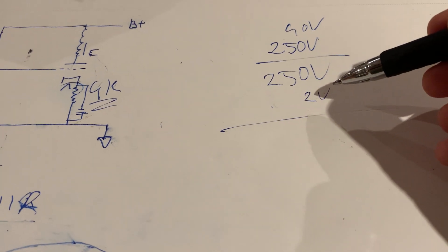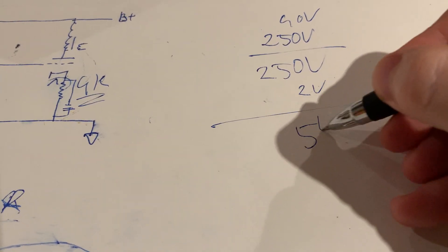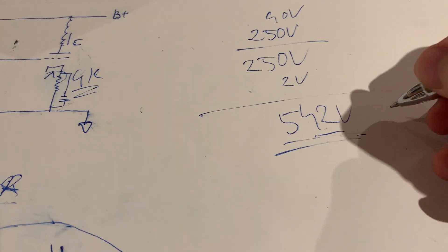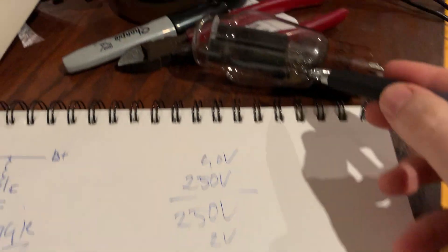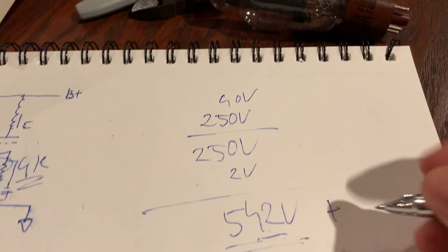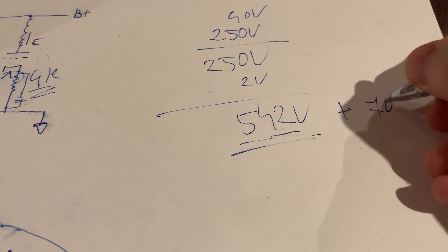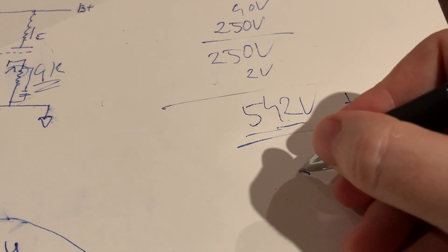If you add all these guys up then you have like 542 volts. So plus this big boy drops about 60 to 80 volts depending on the load, so probably here it drops about 70 volts.